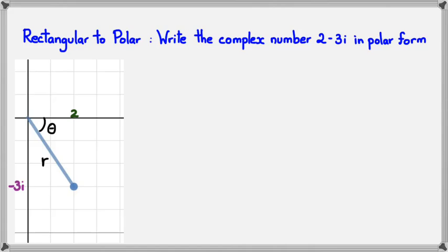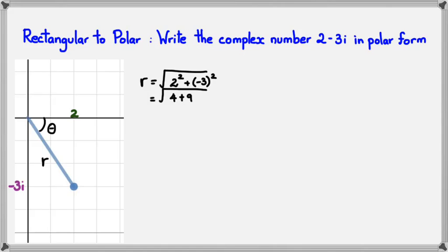Working out the modulus first: R equals the square root of 2 squared plus negative 3 squared, which simplifies to the square root of 4 plus 9, giving us the square root of 13. So the modulus is square root of 13. Now I need to work out the argument.